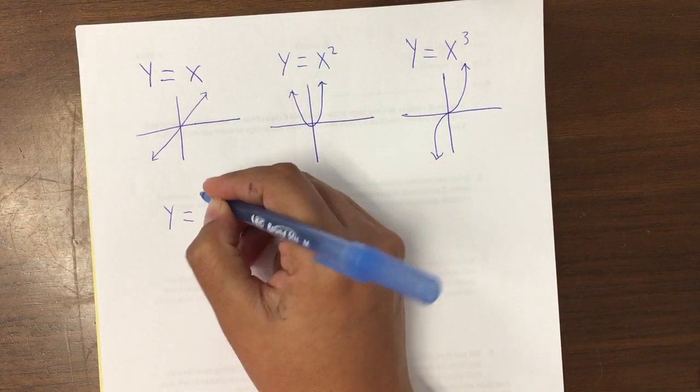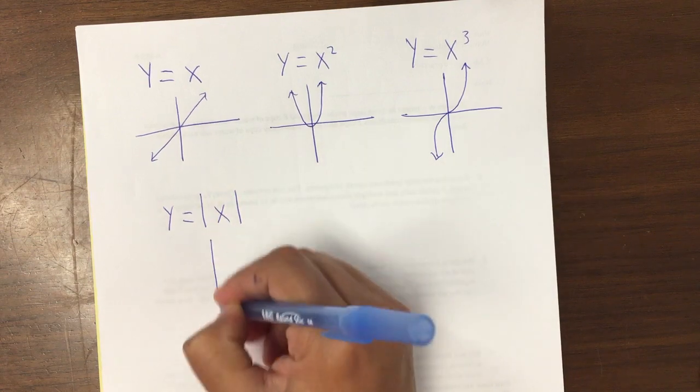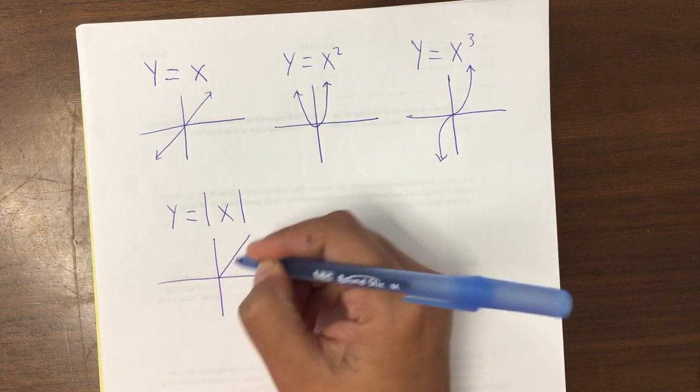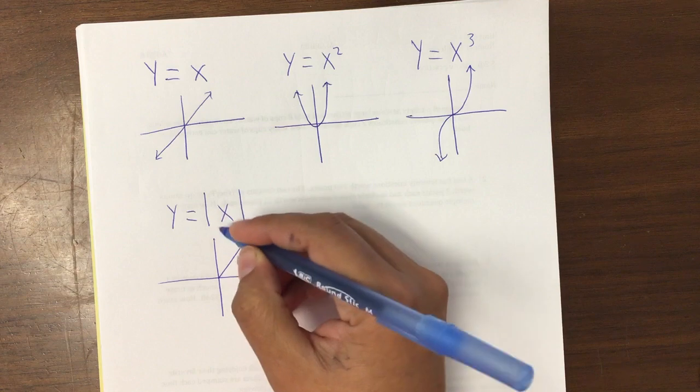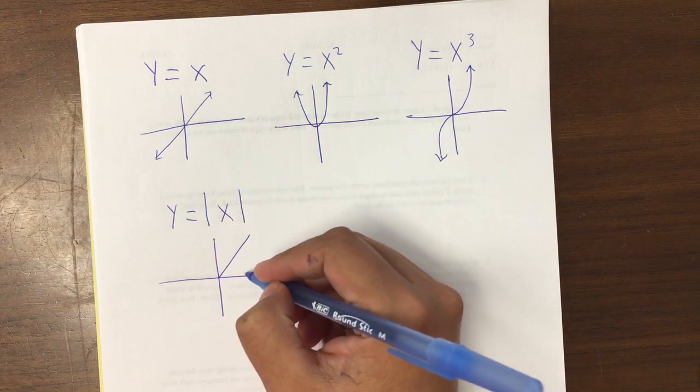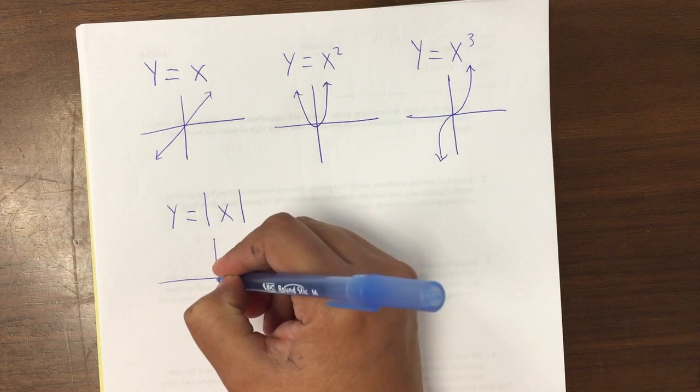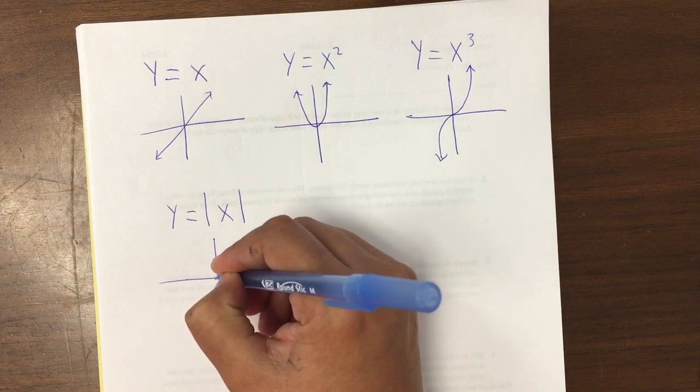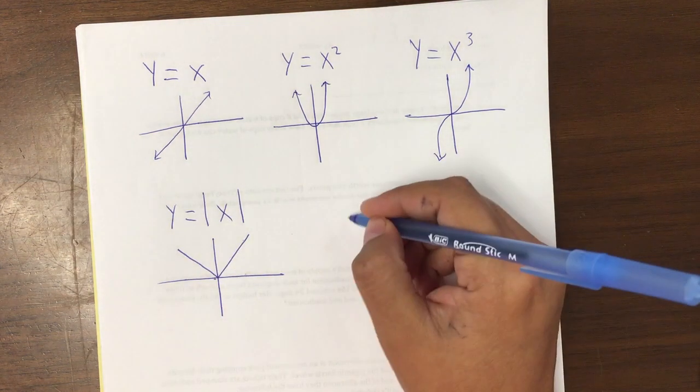You have y equals the absolute value of x. It creates, it means y is always the positive of x. So if x is positive, y is positive. If x is negative, y is positive.